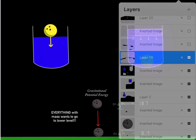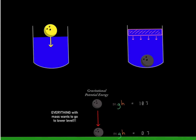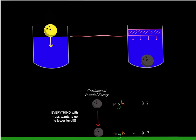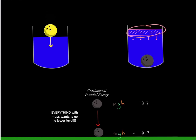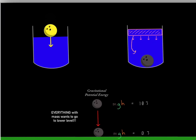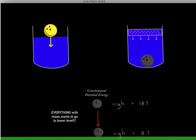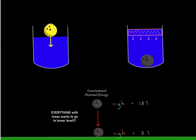This is actually a problem, because there's a battle between two forces. One force involves this bowling ball — it has mass, so it wants to fall to a lower level. However, when this bowling ball falls, it's going to lift up water. But this water that's been lifted also has mass, so it also wants to drop to a lower level. If this water falls, it's going to lift up the bowling ball. So we have a battle between the bowling ball wanting to fall and the water wanting to fall.